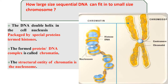A large-size sequential DNA can fit into a small chromosome mainly because the DNA duplex helix in the cell nucleus is packaged into special proteins termed histones. The formed protein-DNA complex is called chromatin. The structural entity of the chromatin is called the nucleosome.